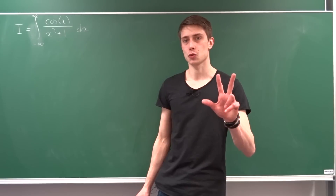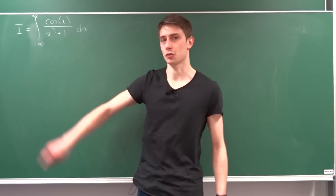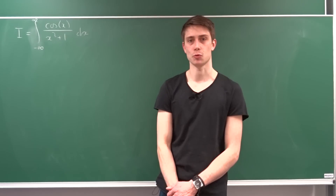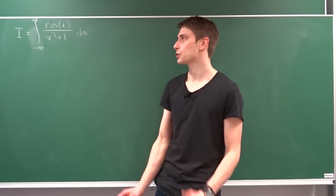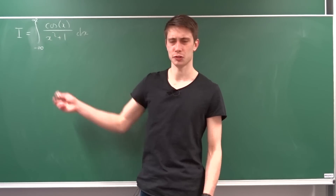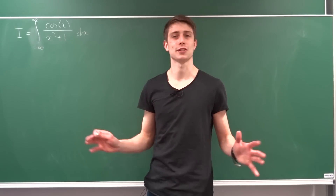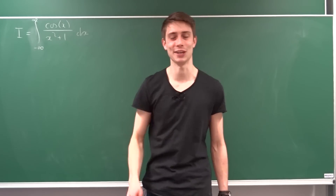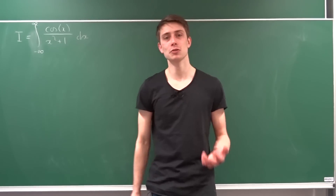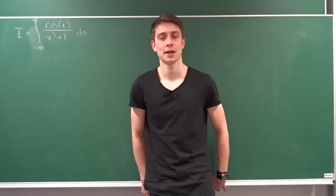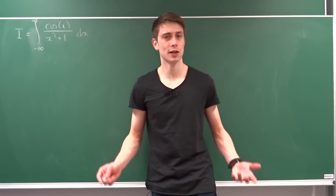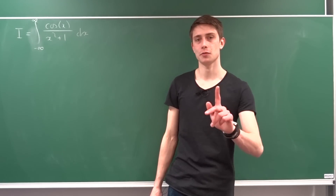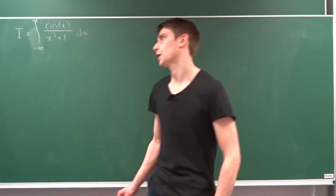In the next three videos we are going to talk about this integral: the improper one from minus infinity to infinity of cosine of x over x squared plus 1. You are going to see that this is going to yield one of the most beautiful results in calculus I've ever seen. We are going to solve it in three different ways, and I'm going to start off with my most favorite one today — we are going to use the Laplace transform. But first we want to define a time-dependent function.